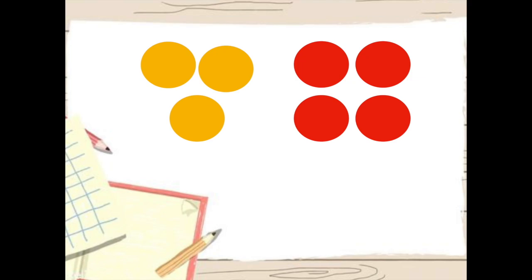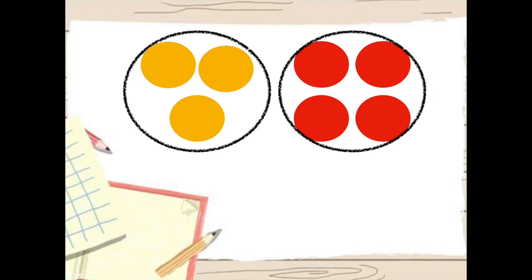You're right. We need to identify the two groups. How many yellow are there? How many red? You got it. Three and four. Do you remember what this symbol is called? It's the plus sign. It means you're joining them together.